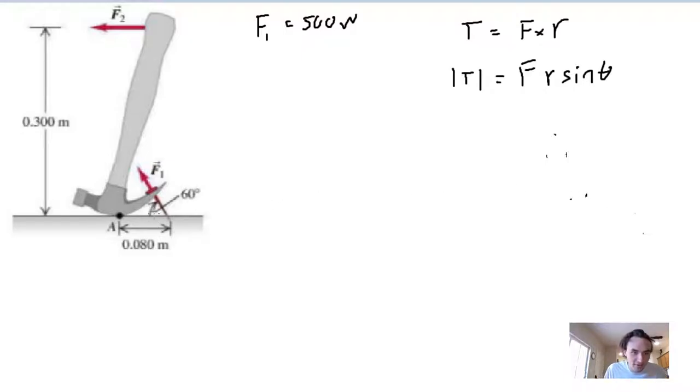We see that we have this angle of 60 degrees right here. So let's first figure out the torque that's related to this force one on this system. The two things we're interested in are this radius right here, and once we figure out this radius, the force will be perpendicular to that radius.